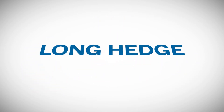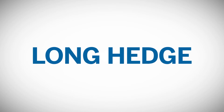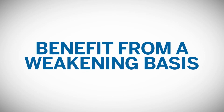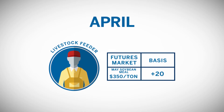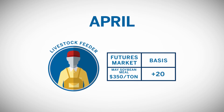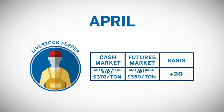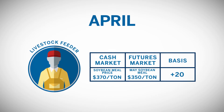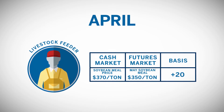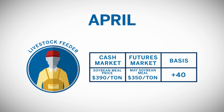How does basis affect the performance of a long hedge? It has an exact opposite effect. Long hedgers benefit from a weakening basis. Imagine that in October, a livestock feeder is planning to buy soybean meal in April, so he's looking to establish a long hedge in the May soybean meal futures contract. May soybean meal futures are trading at $350 per ton, and the local basis in April is typically around $20 over the May futures price. The hedge would result in an expected purchase price of $370 per ton — $350 May futures plus $20 over expected basis. But if the basis strengthens and instead of the expected $20 over it's actually $40 over in April, then the net purchase price increases to $390 per ton, which is $350 plus $40.